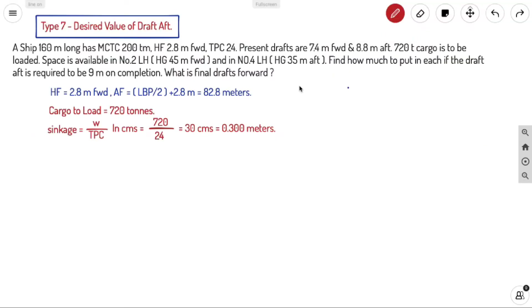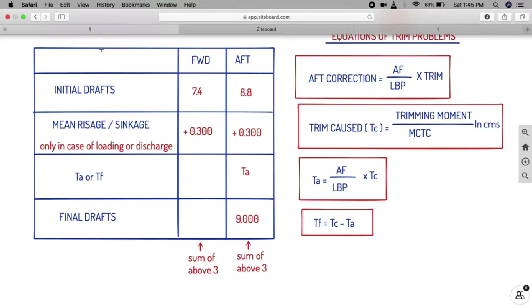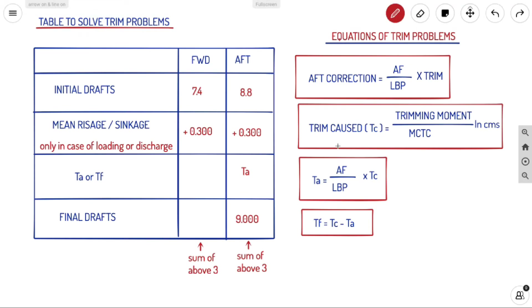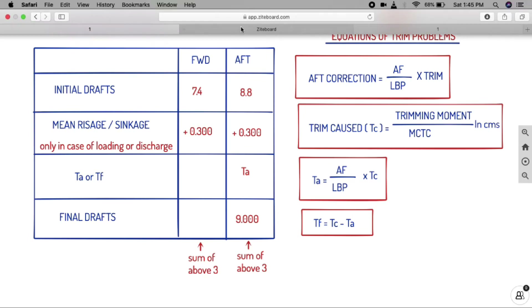The equations we have are: trim change (tc), trimming moment divided by MCTC; ta equals F divided by LBP into tc; and tf equals tc minus ta. The only equation where weight and distance appear is the trimming moment equation. So our main equation is: trim change equals trimming moment divided by MCTC.